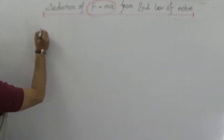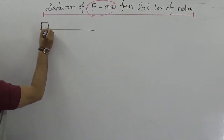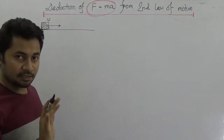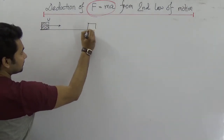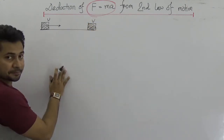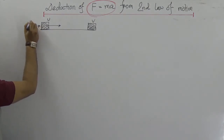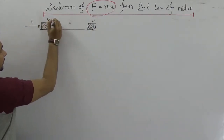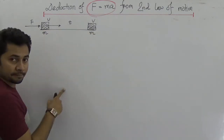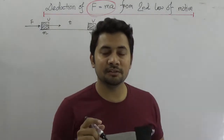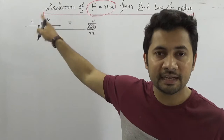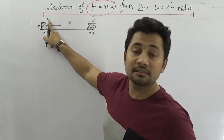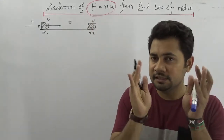Let a body be moving in this direction with the initial velocity U, and through time it arrives here with the final velocity V. This happens because a constant force is applied over time T. If the mass of the body is M, and a constant force is acting on the body, it will move from here to there, giving an initial velocity and a final velocity.